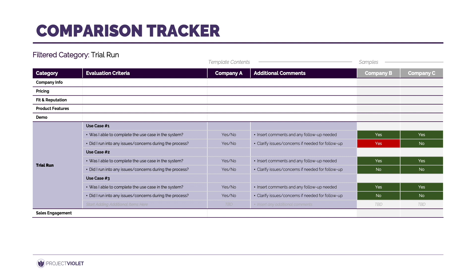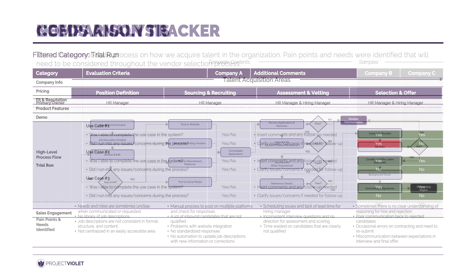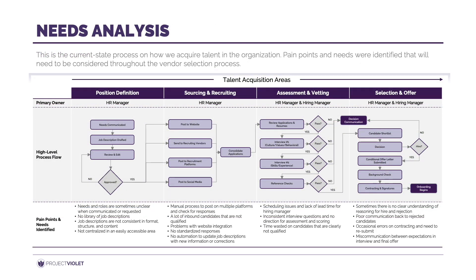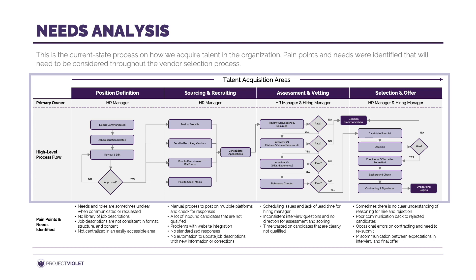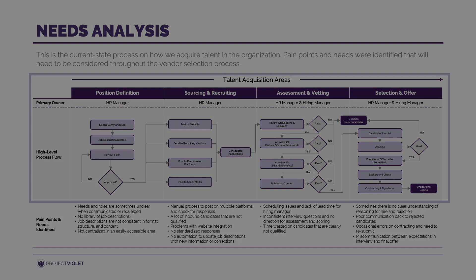Come up with a couple of use cases that each evaluator on your team will try to replicate in the system. They can each document in their own tracker and then compare notes. Go back to your needs analysis and leverage that current state process flow to see if you can replicate parts or the whole process end-to-end in the system. For example, have different team members play the role of candidate, hiring manager, and interviewer to see how the system functions for each role.